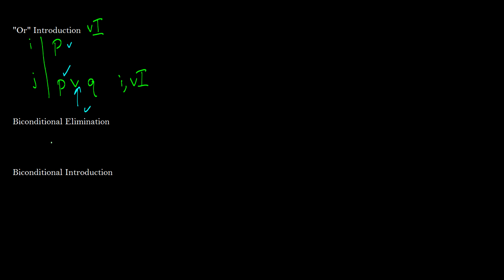Biconditional elimination is sort of a tricky one. If we have A biconditional B, then what we really get is A arrow B and B arrow A. And biconditional introduction is really just the opposite way. So you can call them like this, elimination and introduction. These aren't rules you commonly use.